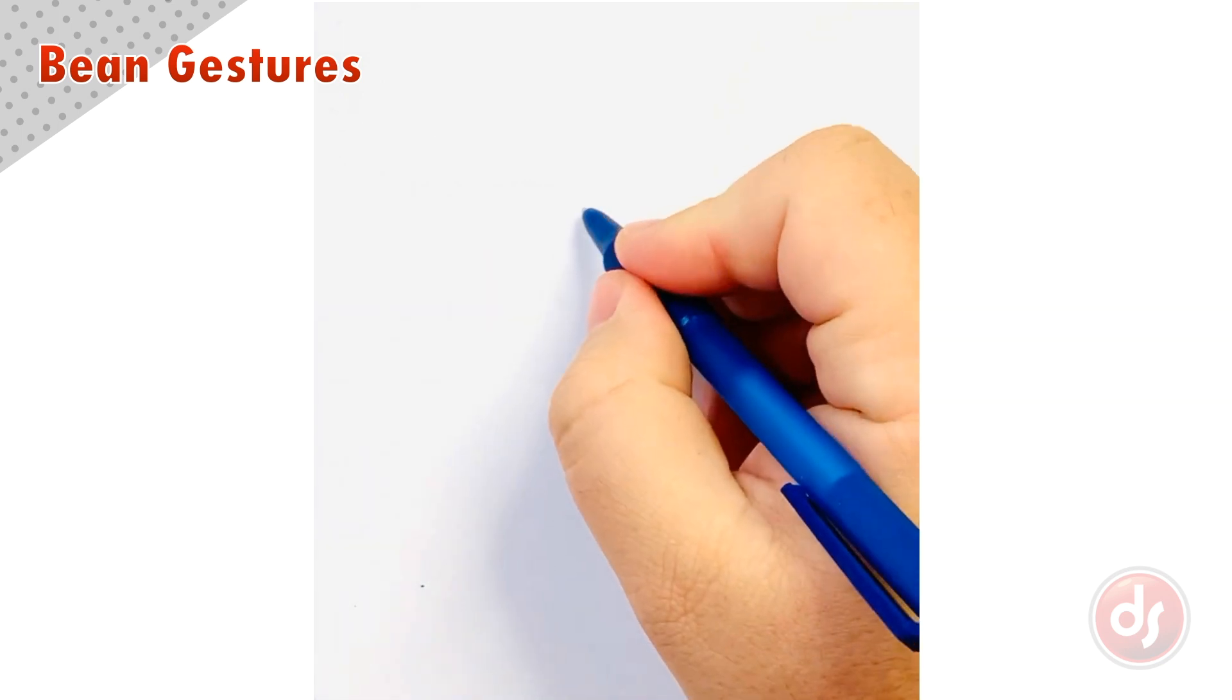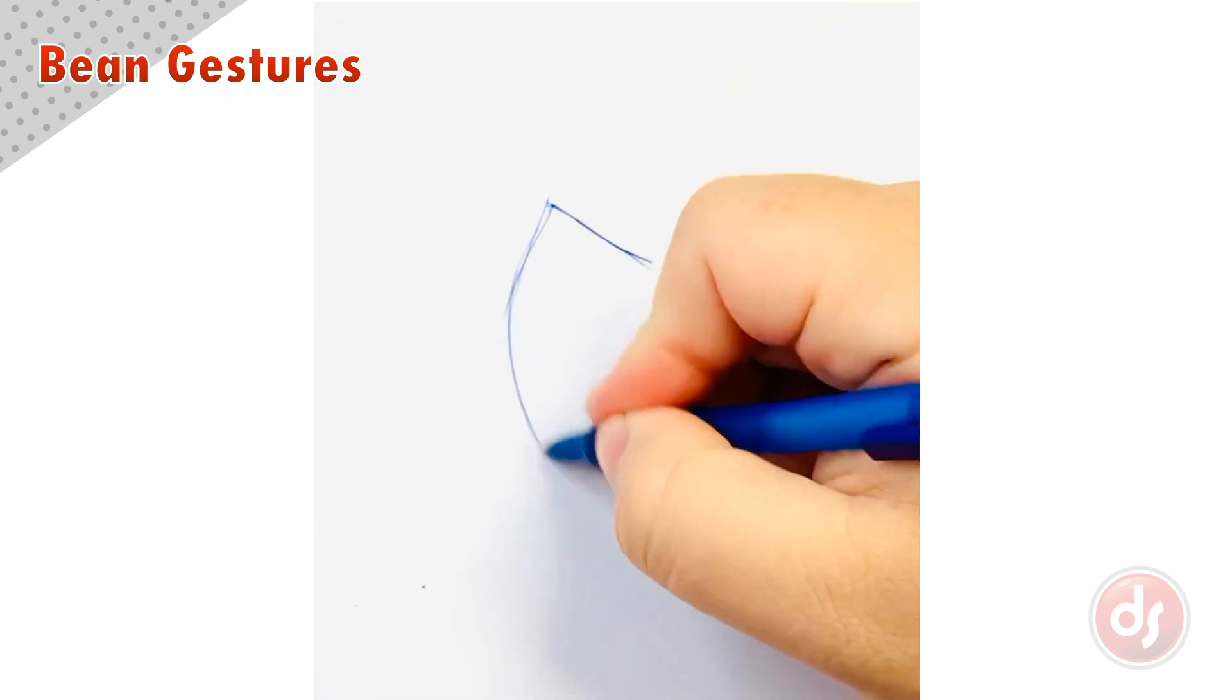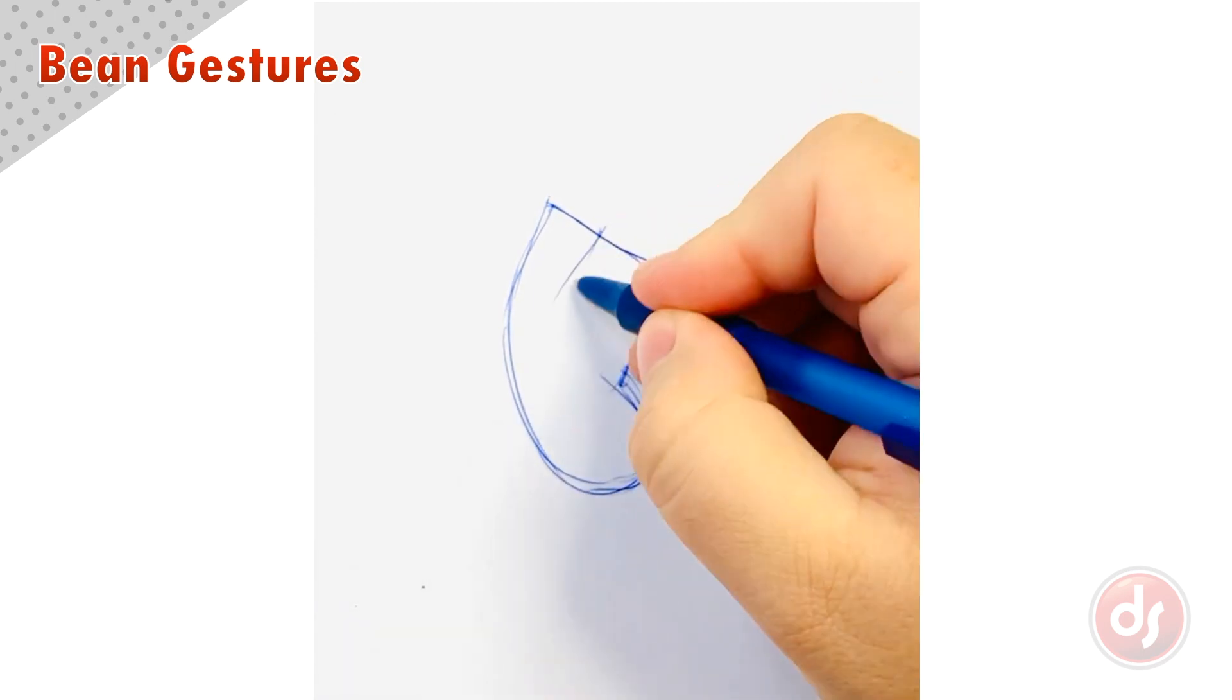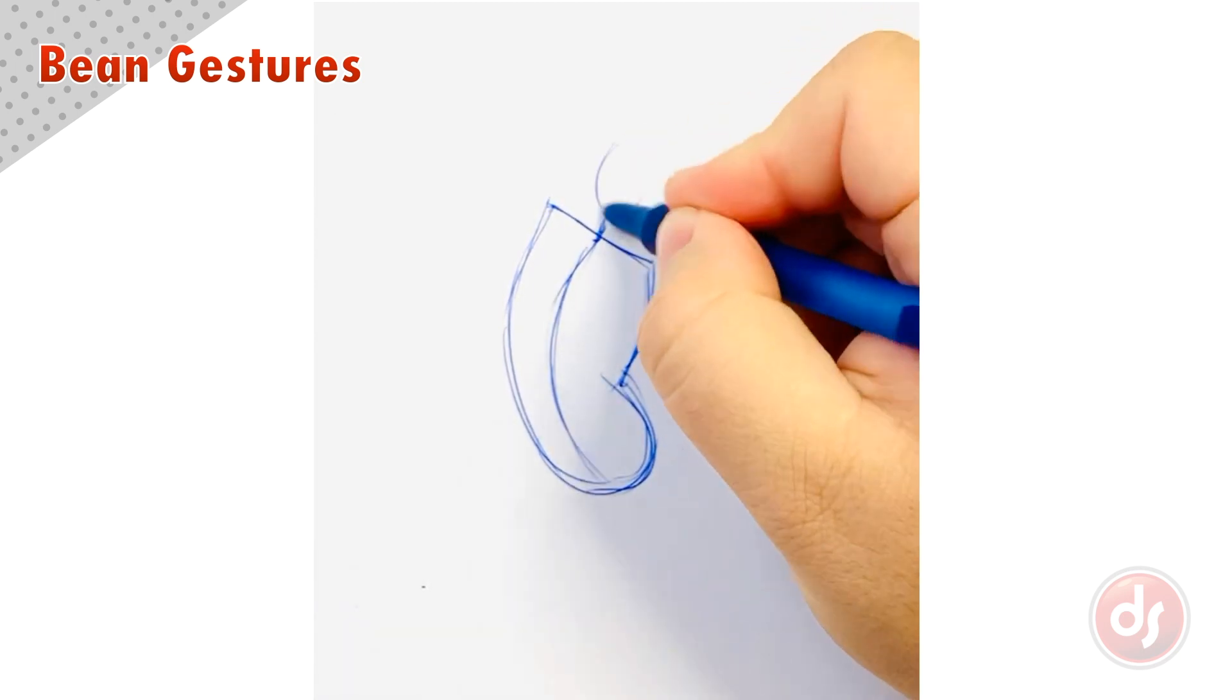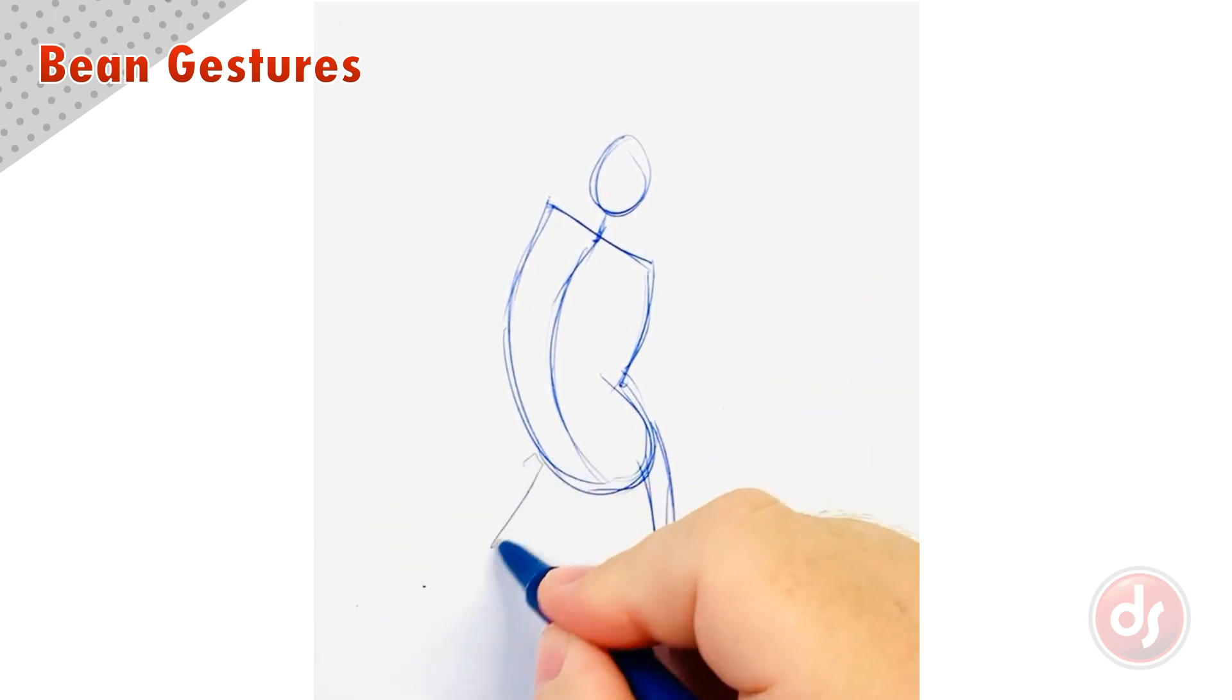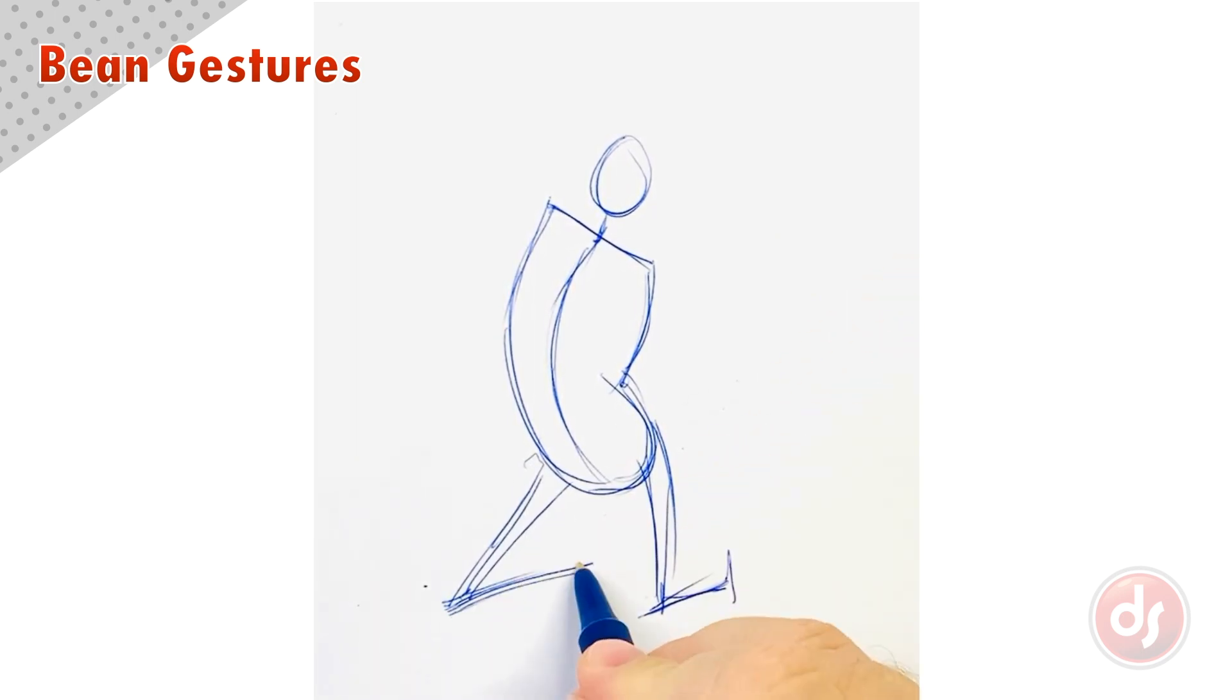Now let's draw some bean shaped gestures. I will start with an angle for the shoulders and then draw the stretch of the bean into the squash of the bean. A center line helps me understand the position of the body and then I get the gesture for the head and limbs. With practice these simple bean shaped gestures will take you less than a minute.